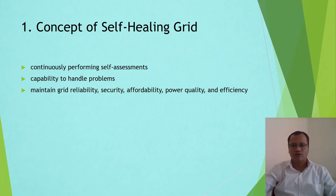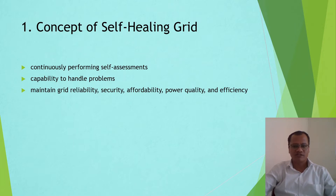For example, probabilistic risk assessment based on real-time measurement can be used to identify the equipment, power plants, and lines most likely to fail. A second example: real-time contingency analysis can be used to determine overall grid health and trigger early warnings of trends that could result in grid failure.